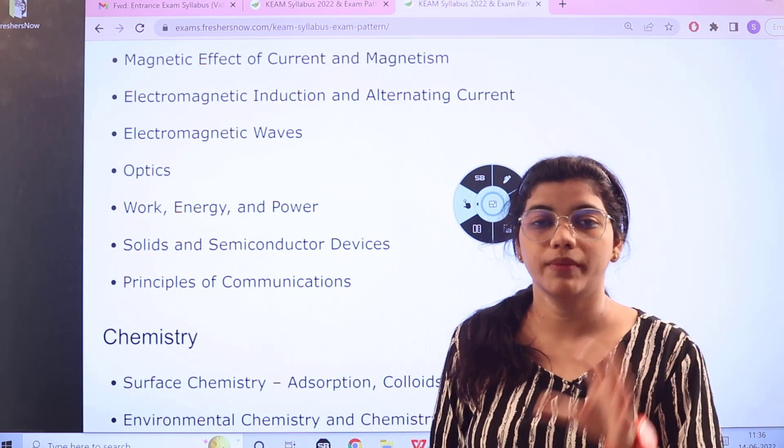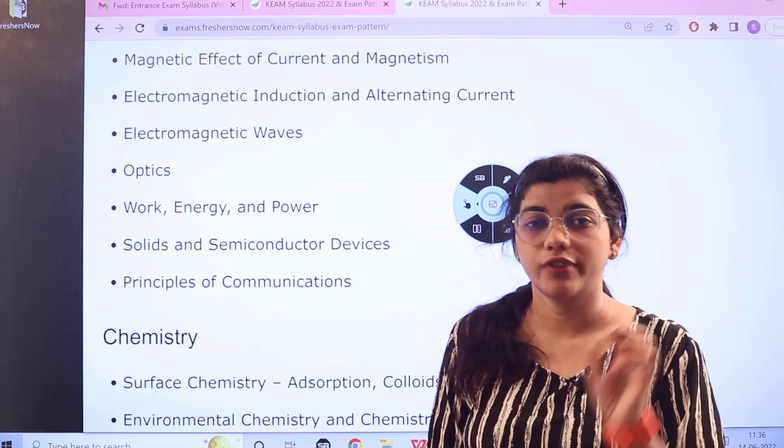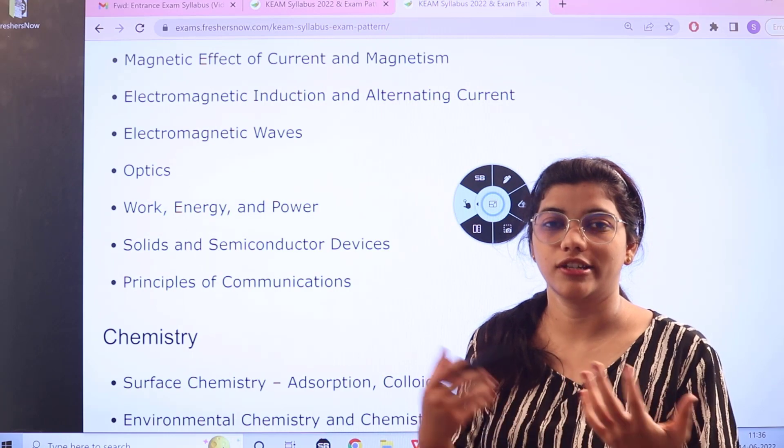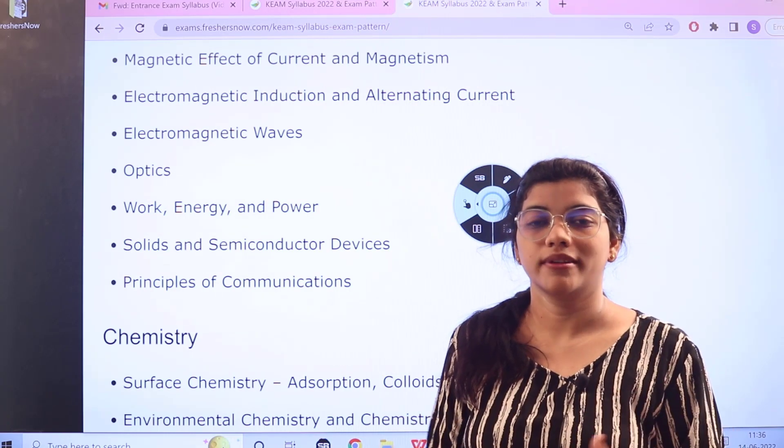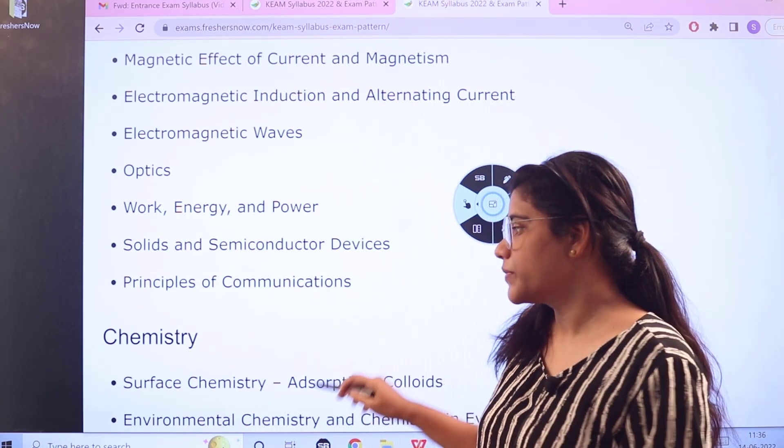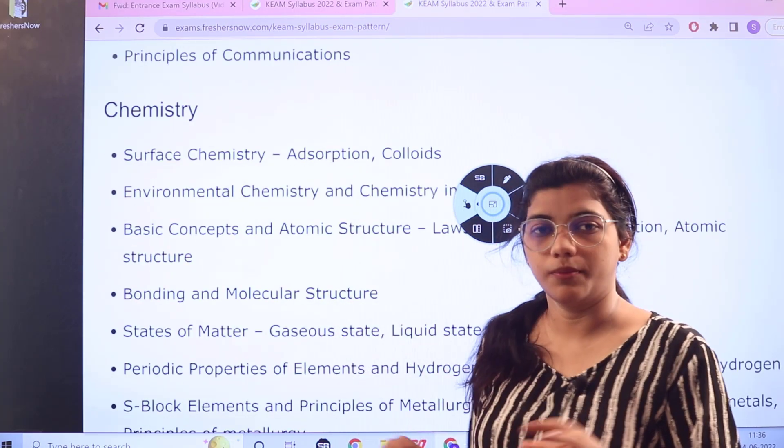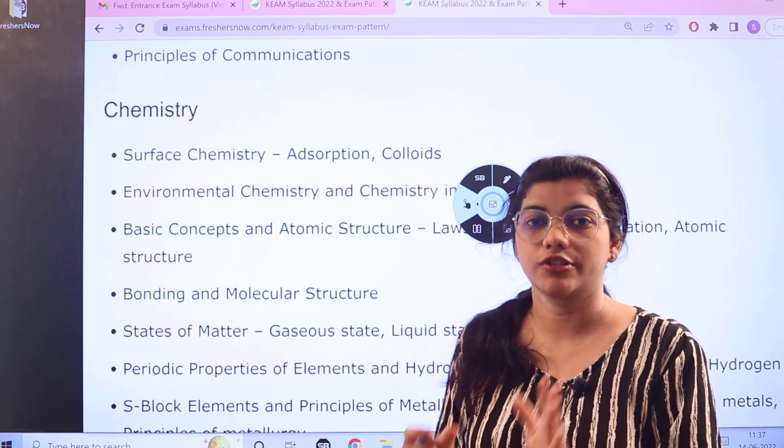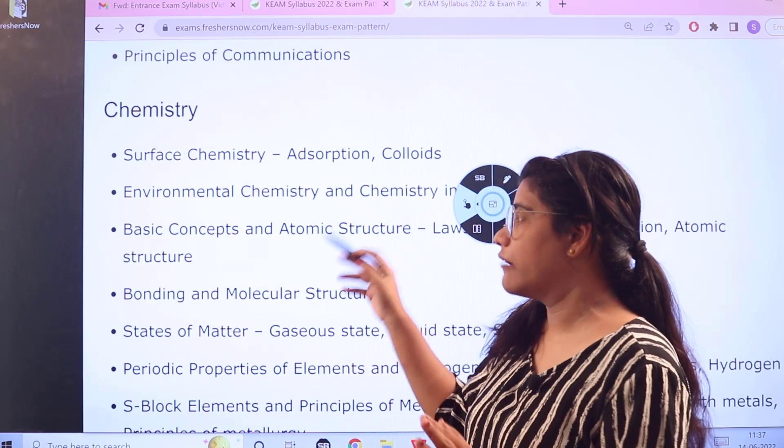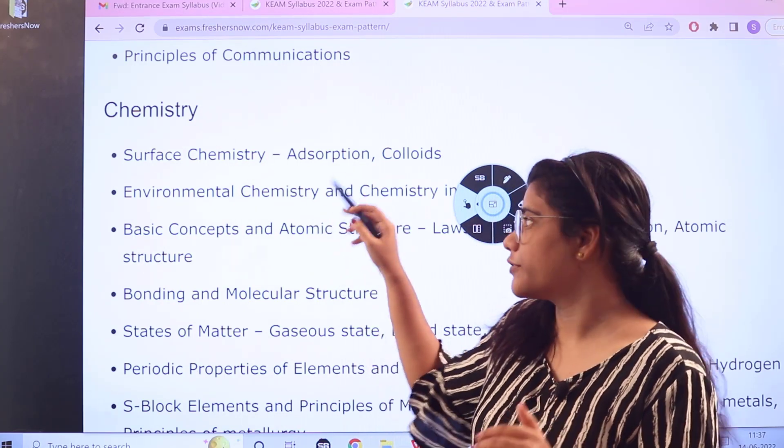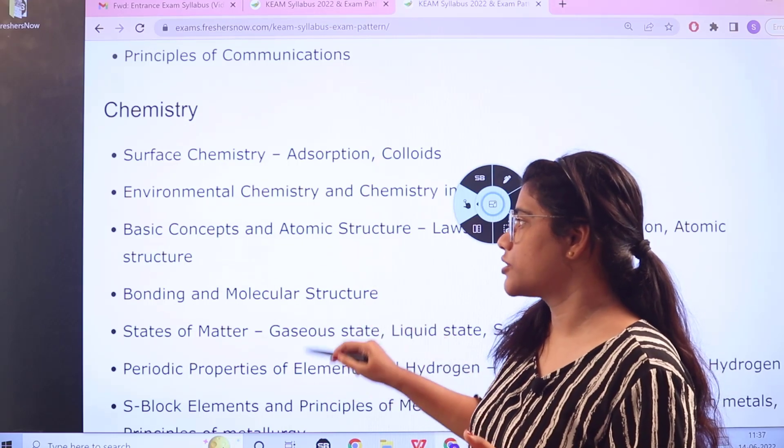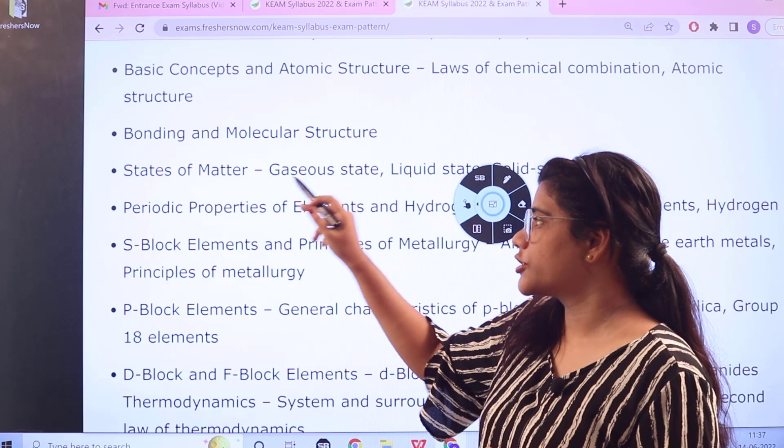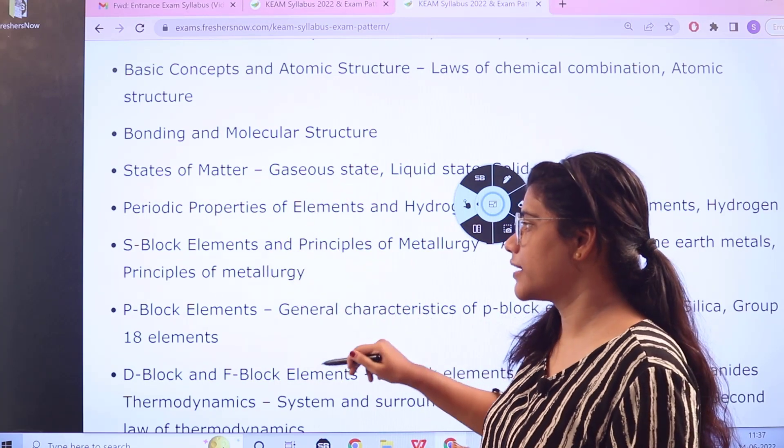So you have to be well conversed, well aware as to how these basic concepts are working. Then you can actually get into the core explanation of the same topics. Then for chemistry you have the block elements and the basic formulae or the structures of the elements, and after that you would be working on surface chemistry, environmental chemistry, basic concepts of atomic structure, bonding of molecular structure, states of matter, periodic properties of elements.